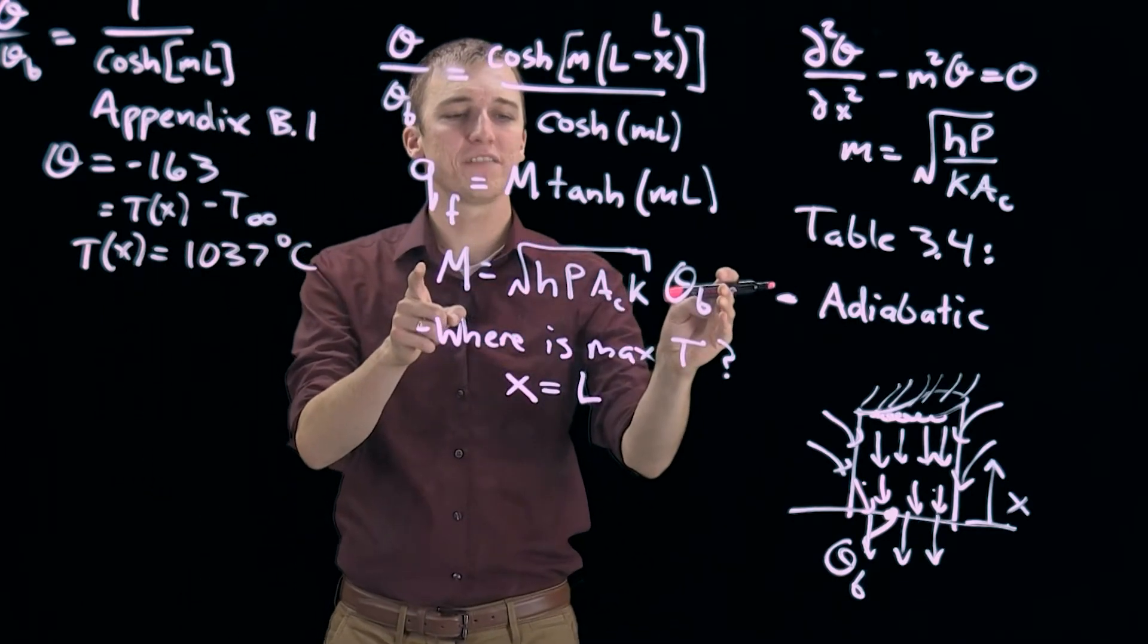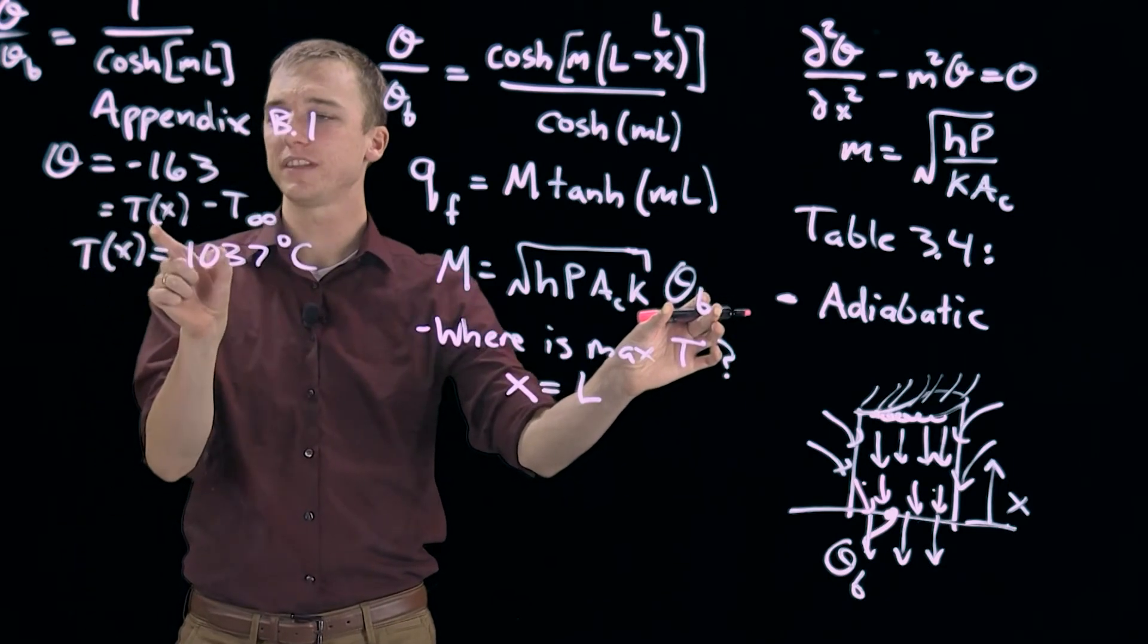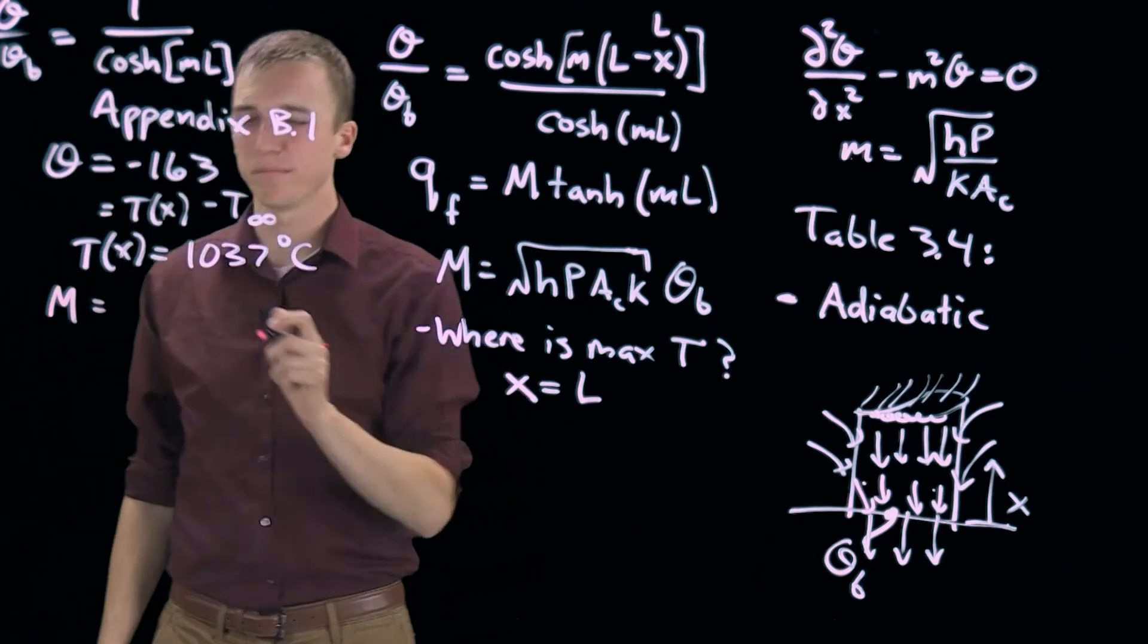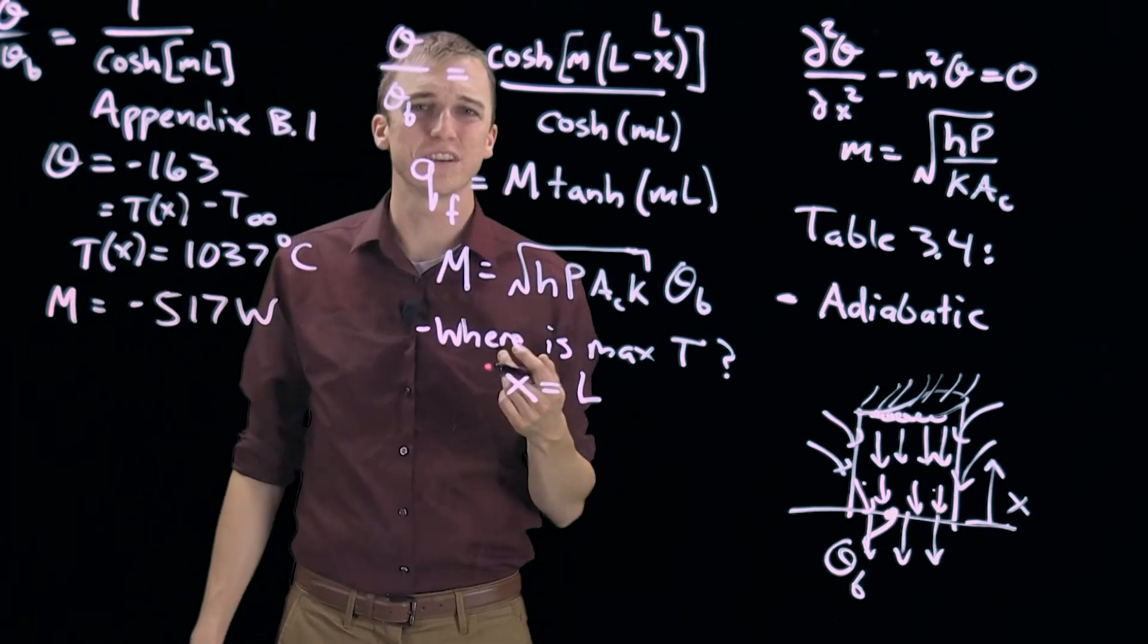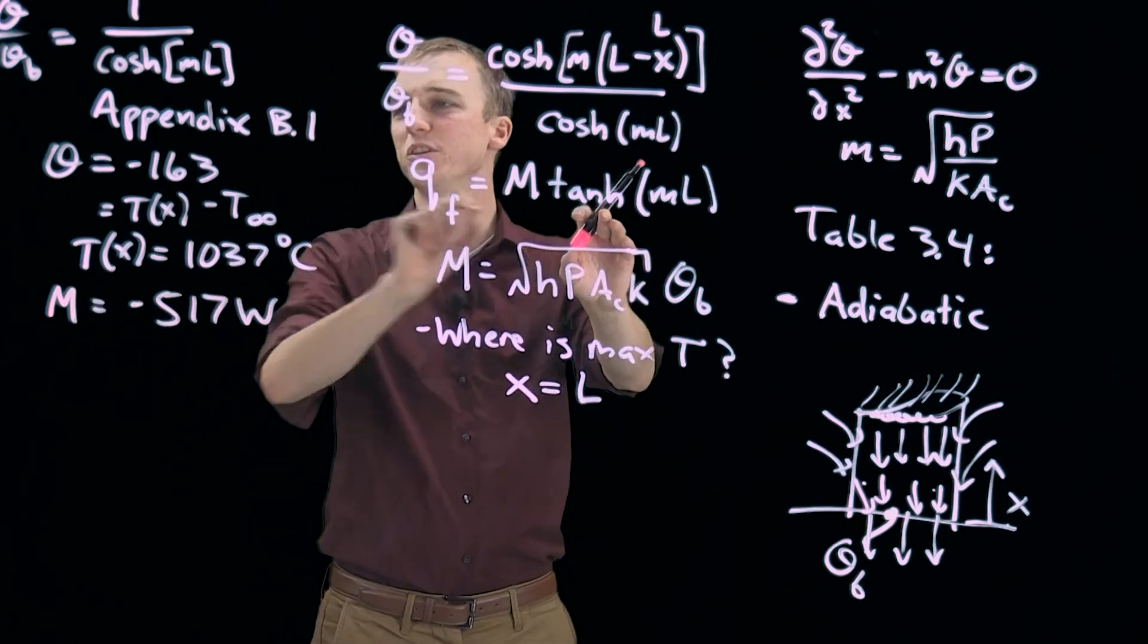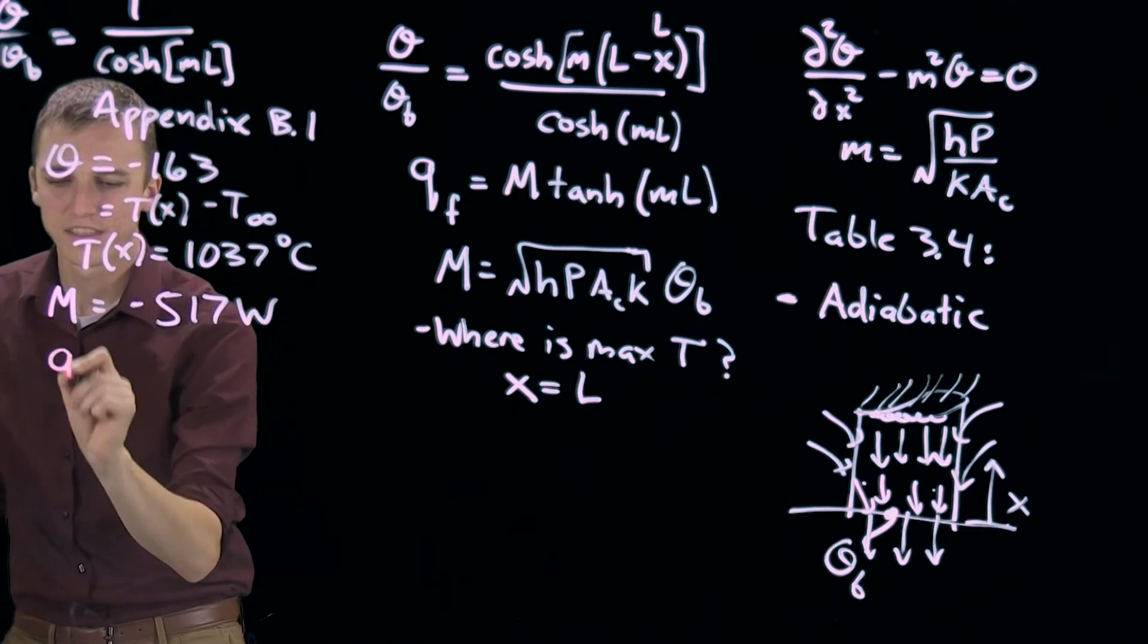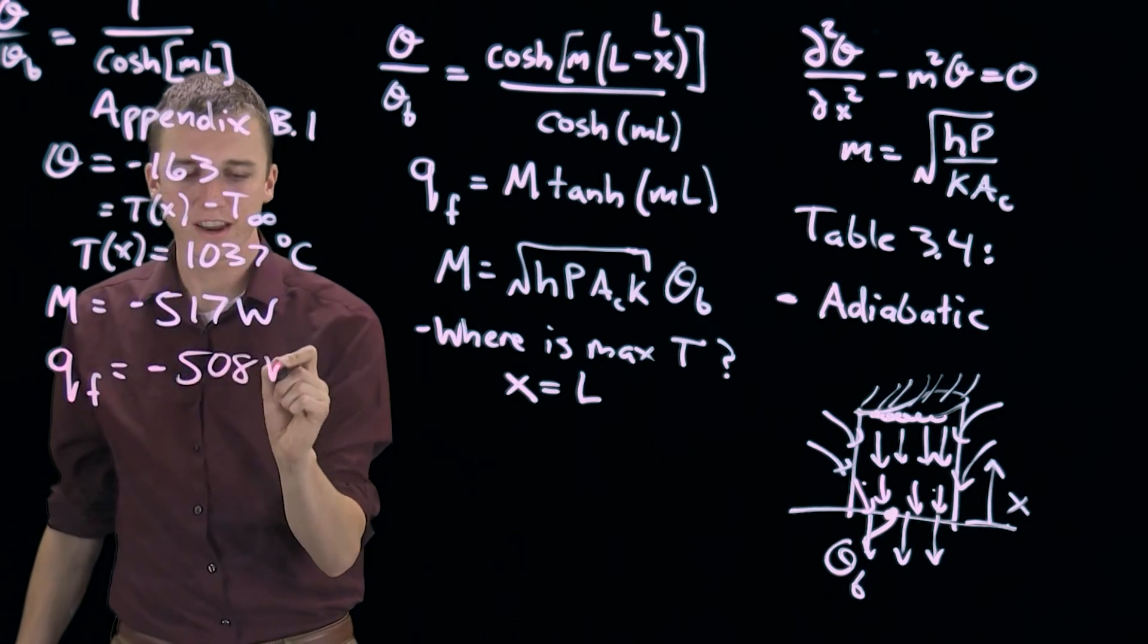Likewise, we can plug in values for M, where theta B is theta evaluated at the base. We can plug in all of these values, which we already knew. That will give us a value for capital M, which is minus 517 watts. Capital M has units of watts. So when we plug in capital M here and evaluate using appendix B.1, the hyperbolic tangent of m times L, then we find the heat transfer, in this case, into our fin, which is minus 508 watts.